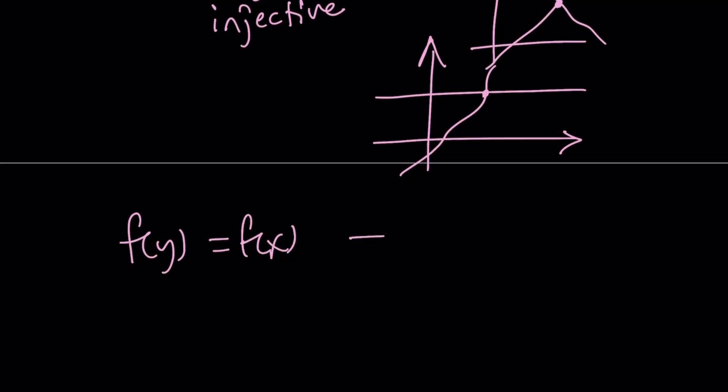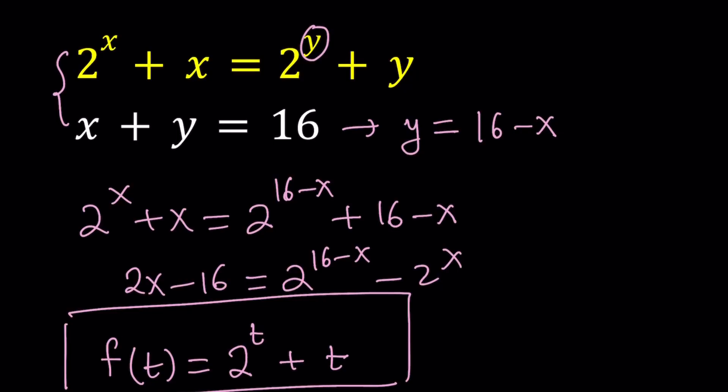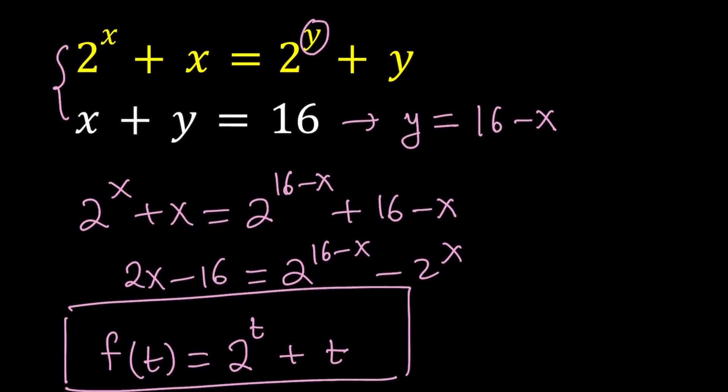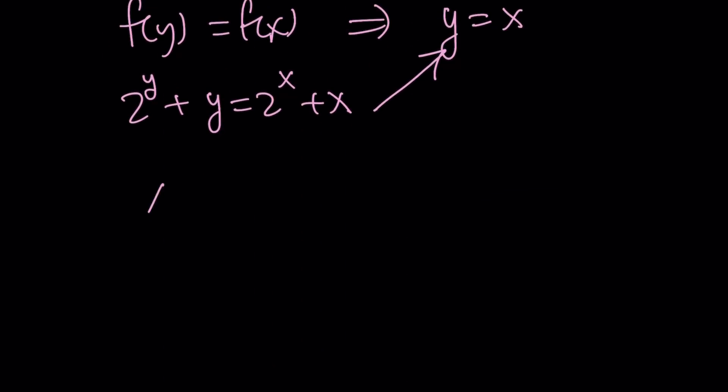Awesome. So from a complicated equation like 2 to the power y plus y equals 2 to the power x plus x, we got something much simpler, which is y equals x. That's really cool because now our system turns into the following. Remember we were given 2 to the power x plus x equals 2 to the power y plus y and x plus y equals 16. Now we're going to replace the first equation with x equals y or y equals x. And the second equation is just x plus y is equal to 16.